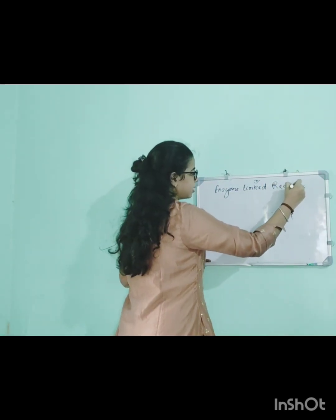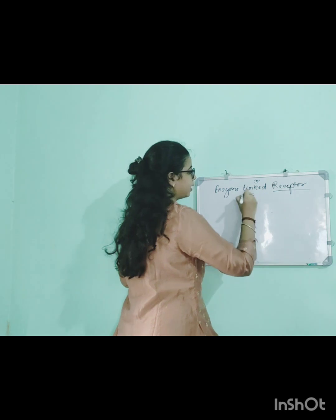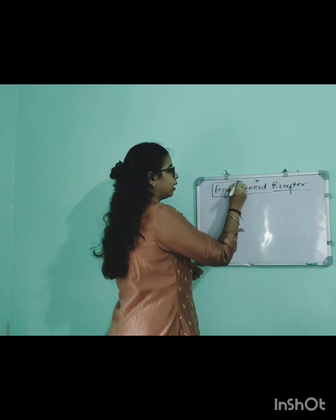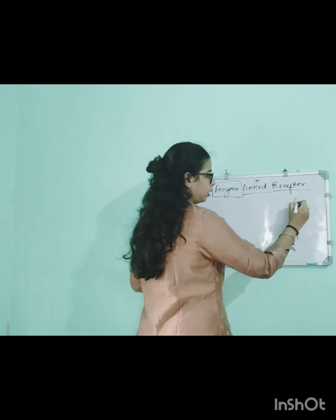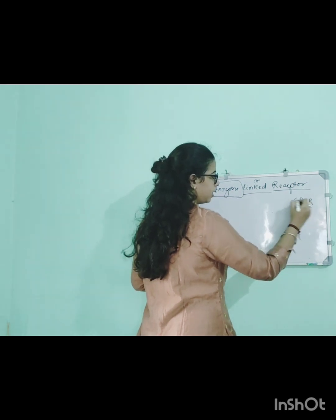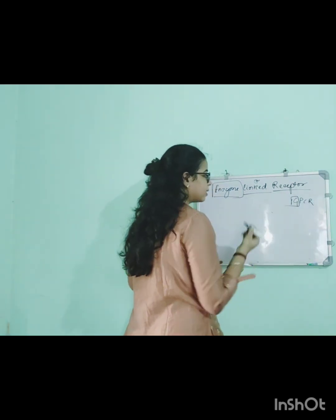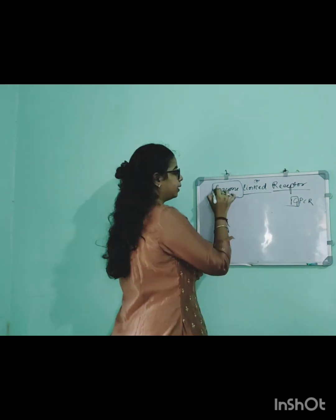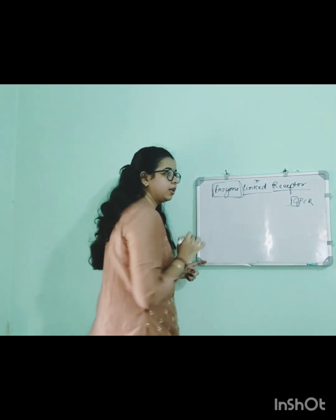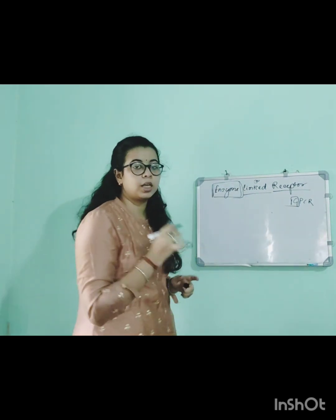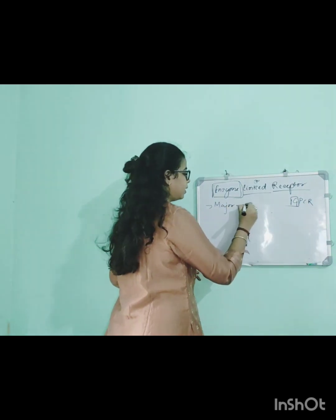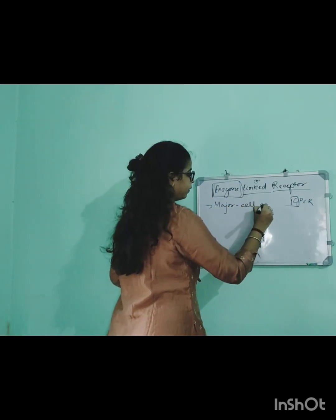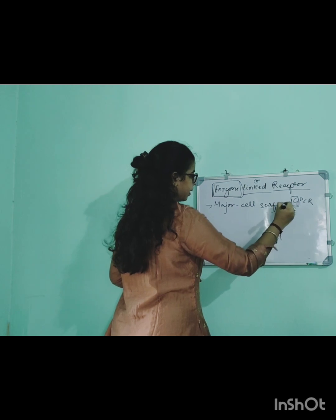As the name itself suggests, the enzyme-linked receptor is linked to an enzyme. Just as in the case of GPCR it was linked to a G protein, in the same way this receptor will be linked to an enzyme. That is why it is called the enzyme-linked receptor. It is a major cell surface receptor.